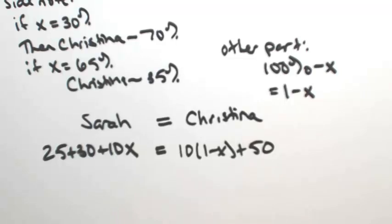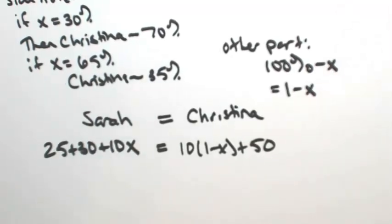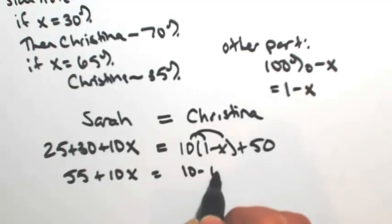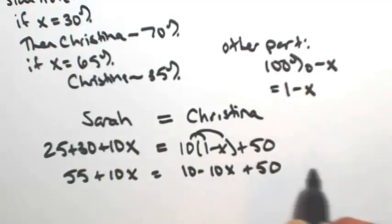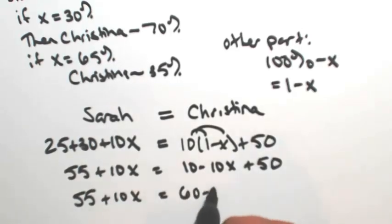So now at this point, we have a linear equation. The first thing we want to do is distribute, and then we'll combine anything that's alike. So on the left side, I have 55 plus 10x. Distribute that 10, so 10 minus 10x. So 55 plus 10x equals 60 minus 10x.